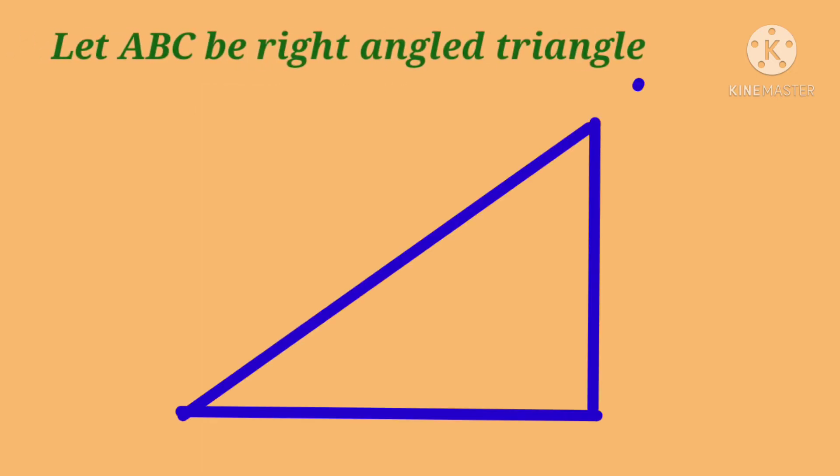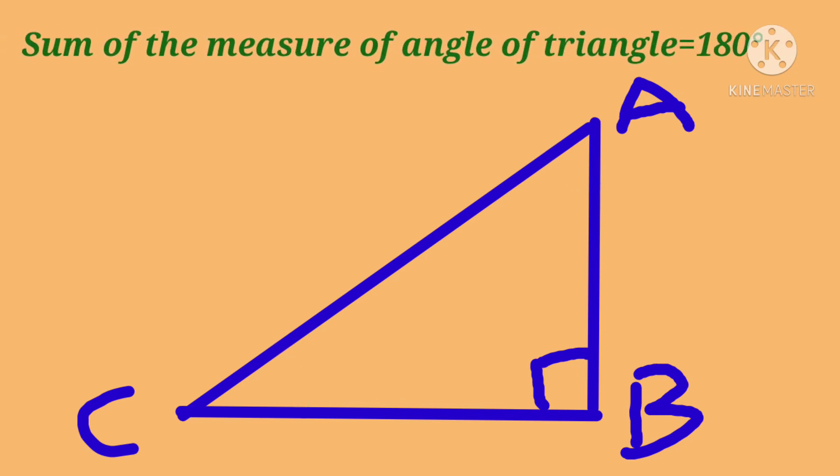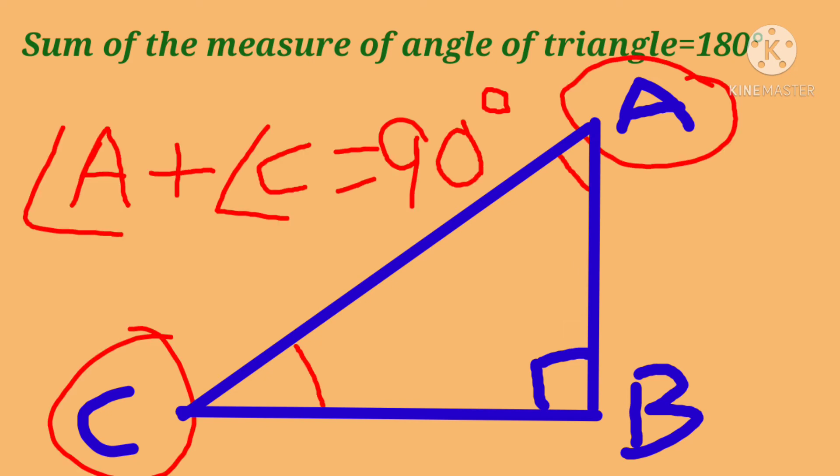In a right angle triangle, one of the angles will be definitely 90 degrees. What will be the other two angles? The sum of the angles of a triangle is 180, and one we have already fixed as 90 degrees. The other two angles will sum to 90 degrees.